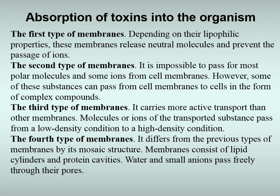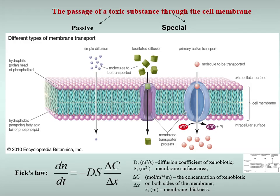The second type of membrane: for most polymer molecules and some ions, cell membranes are impermeable. However, some of these substances can pass from the cell membranes to cells in the form of complex compounds. These complex compounds are formed as a result of the interaction of the corresponding substance molecules with carrier transport system molecules contained in the membrane. Carrying molecules include enzymes, some membrane-specific proteins, and other substances. After entering the cell, the complex compounds break down, releasing the polar substance.